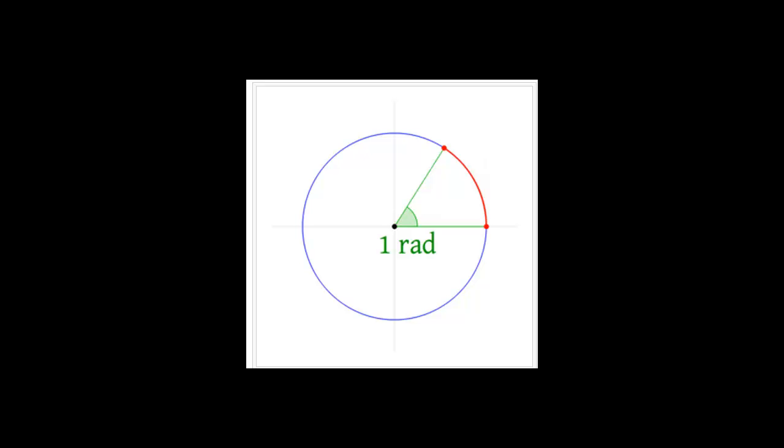So now the next question is, how many of these radians will fit inside of a circle? Well, let's go one more radius length, so now we have two radians, and now we have three radians.